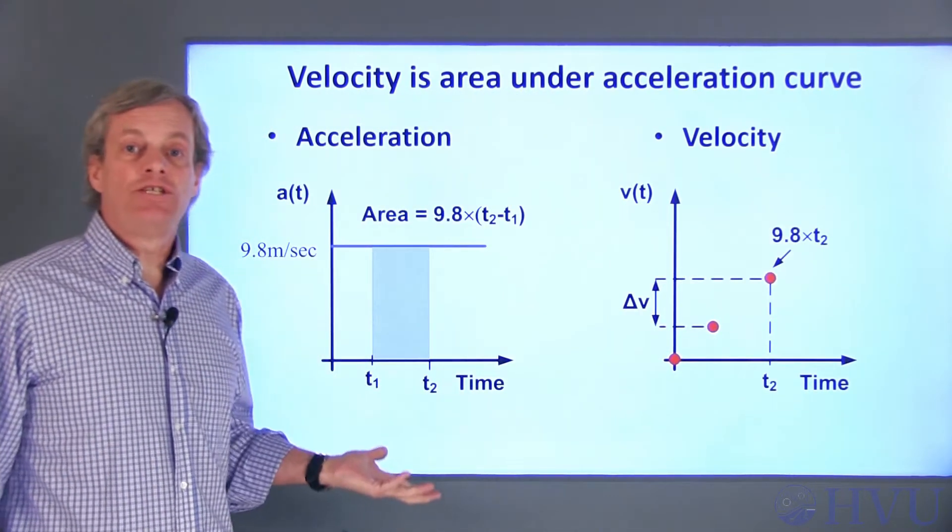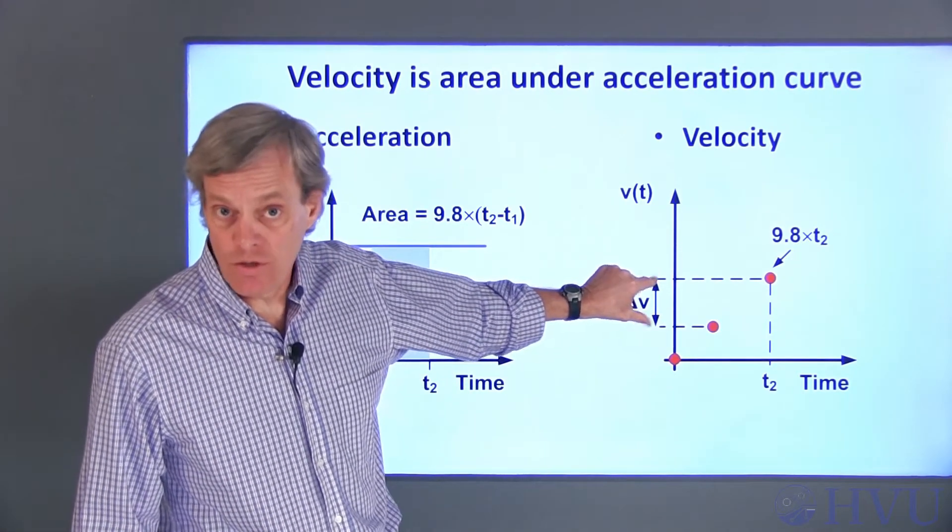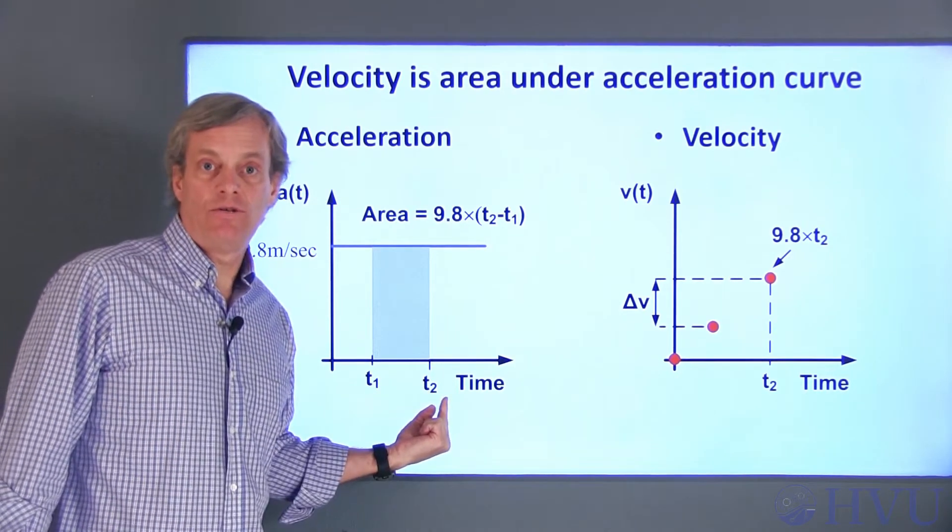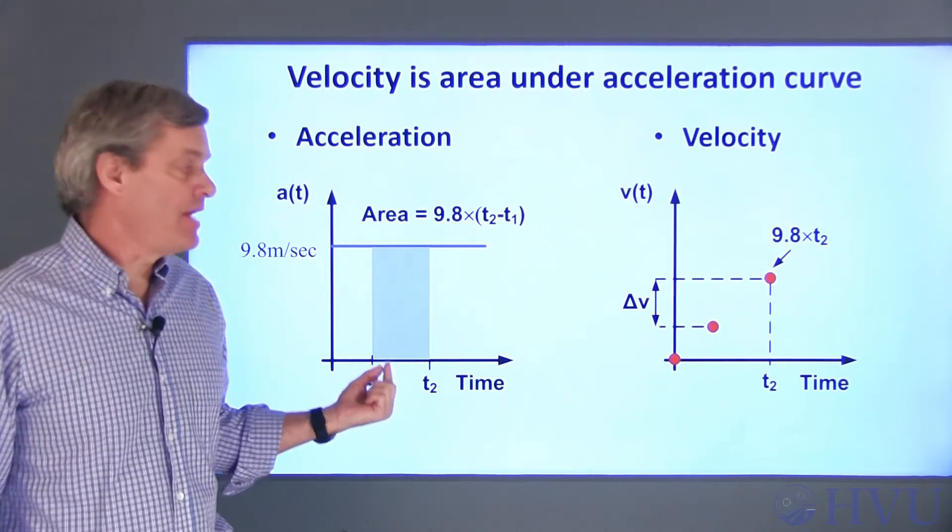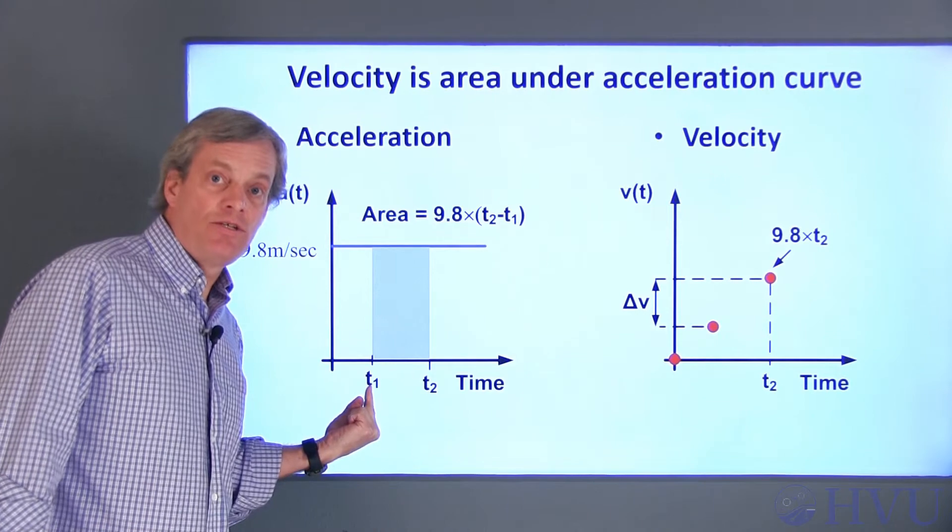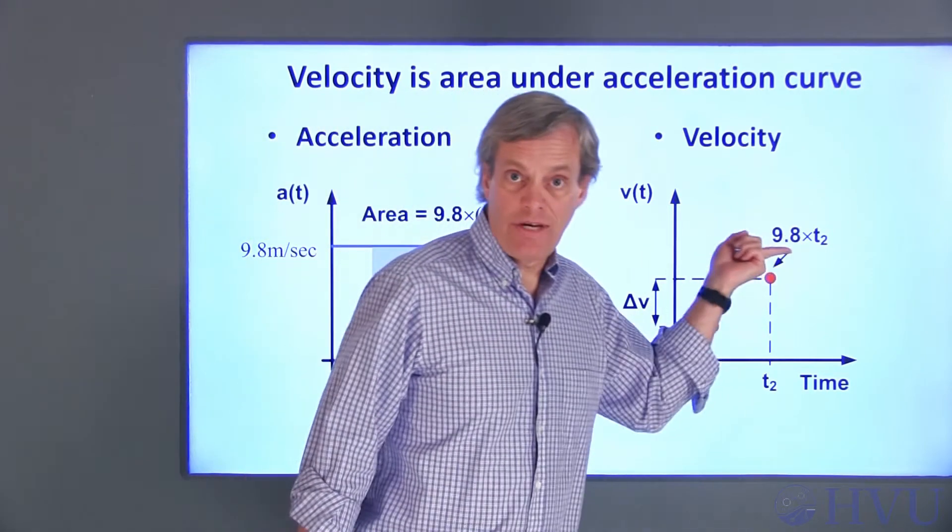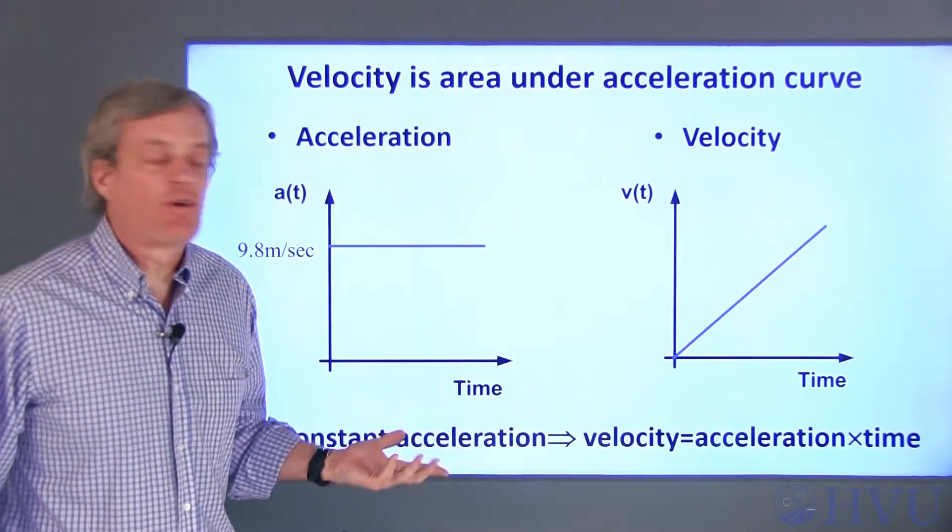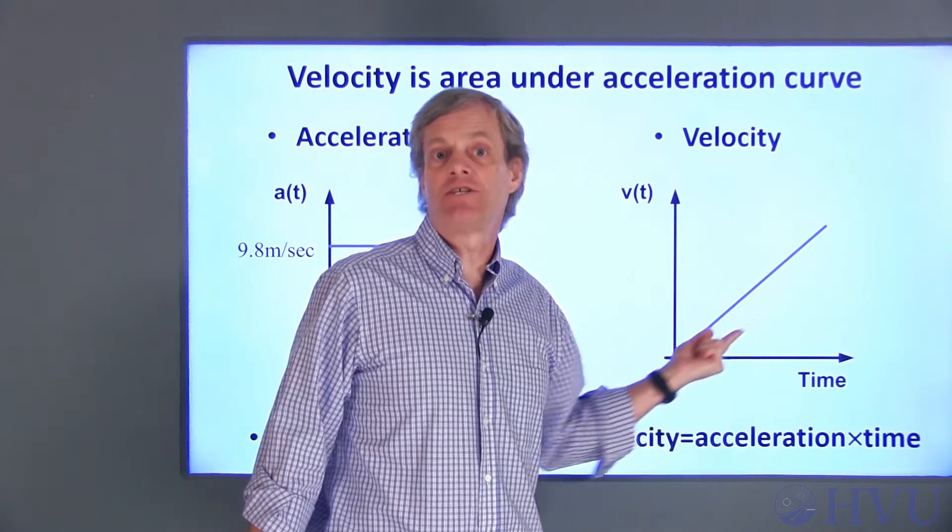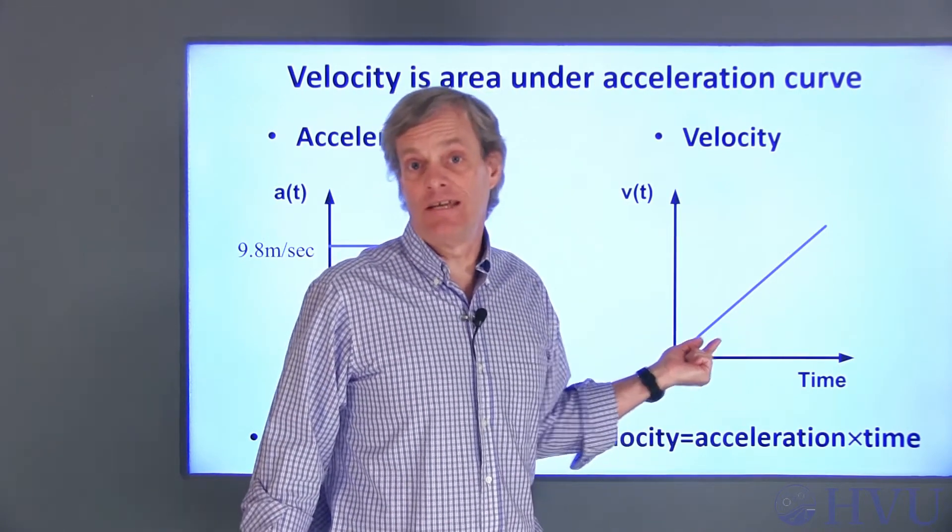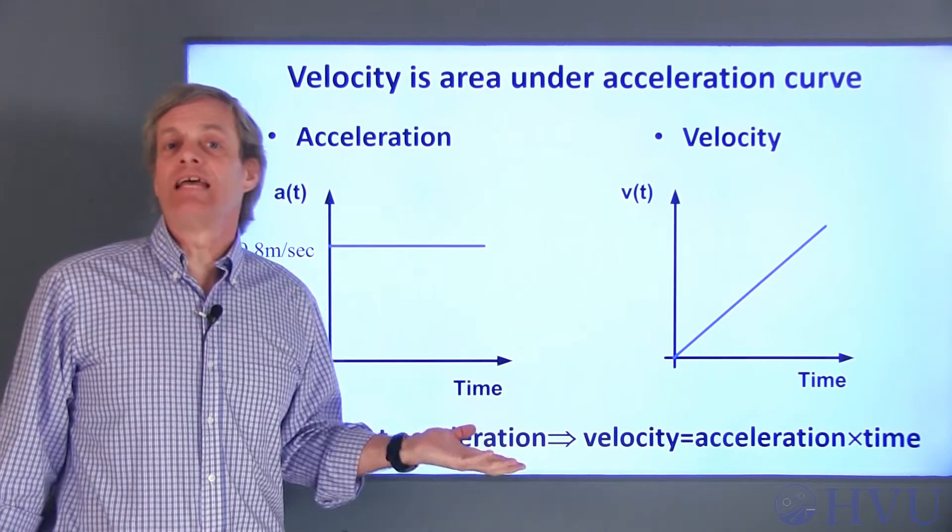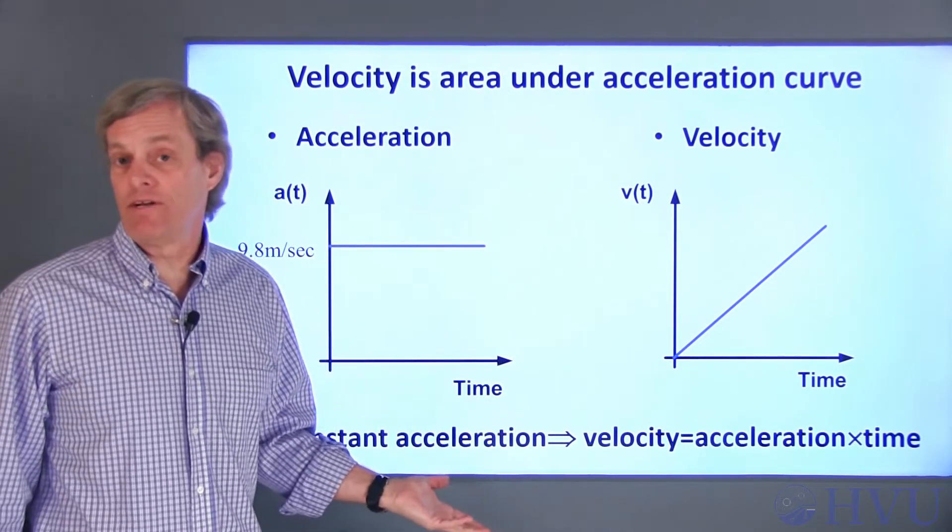Likewise, the change in velocity of the rock between time t1 and t2 will be the area under the acceleration curve between t1 and t2. The velocity of the rock at t2 is 9.8 times t1 plus 9.8 times (t2 minus t1), which is just 9.8 times t2. If we do this for every value of time and plot the resulting velocity as a function of time, we get a straight line. Velocity increases linearly and the slope is 9.8 meters per second. This is the same result we had in the video on derivatives, which is a good thing.